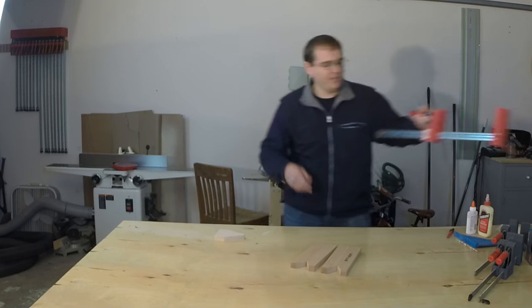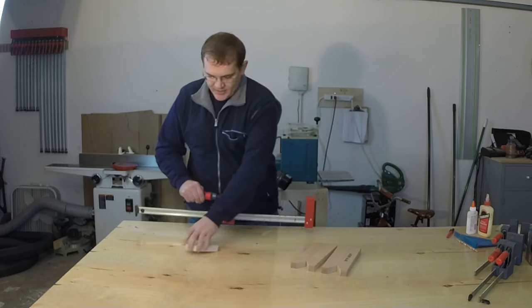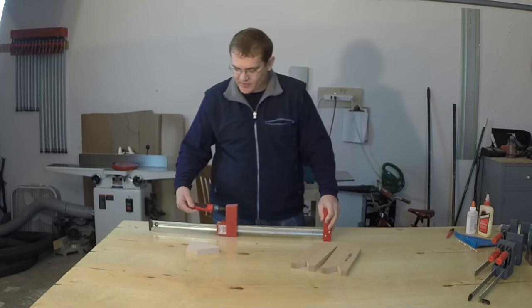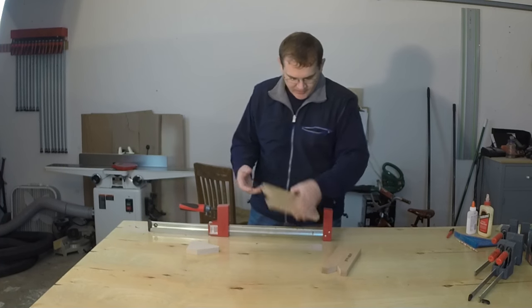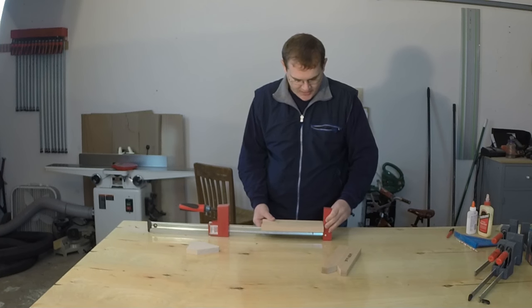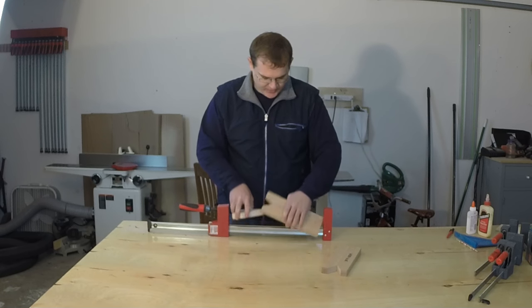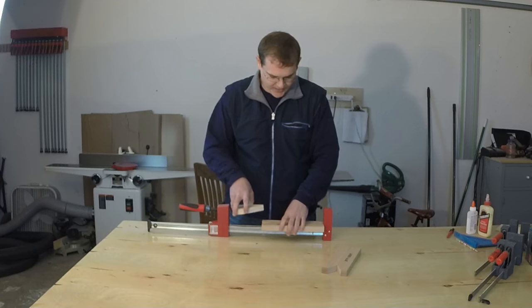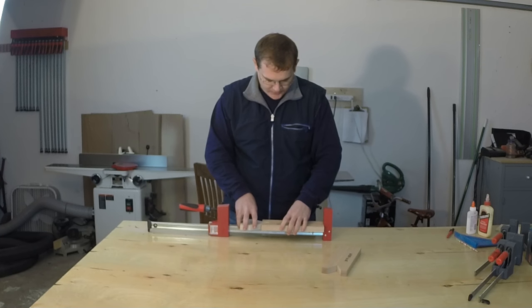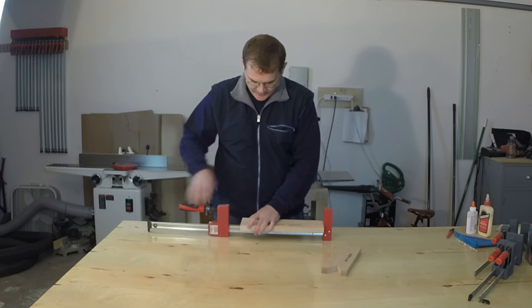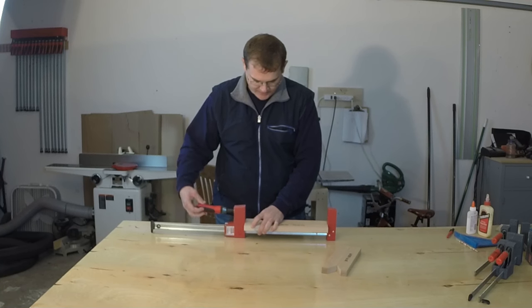This is a clamp that I'm using. This is a Bessey clamp and it's rated up to 1500 pounds clamping pressure. I'm simply going to place this piece of wood here and I'm going to place this block right here. We'll start with the school glue. I'm going to set this up, give it a crank and we'll see what happens.